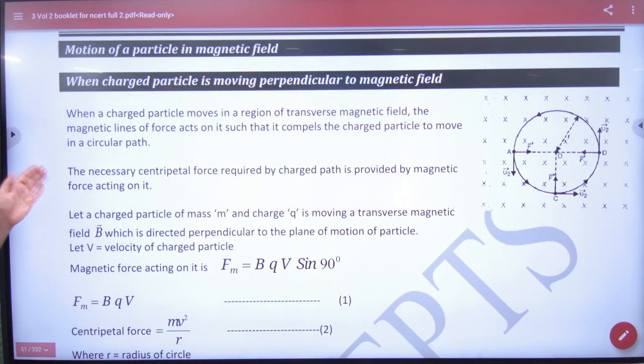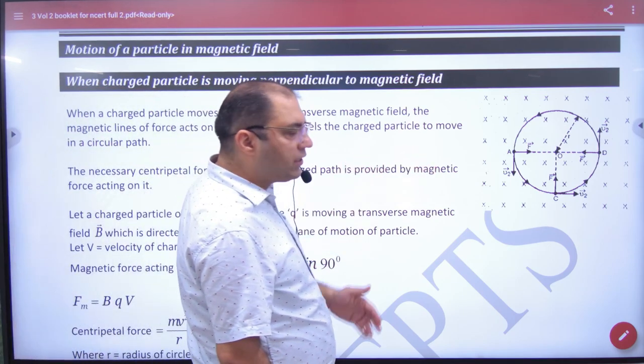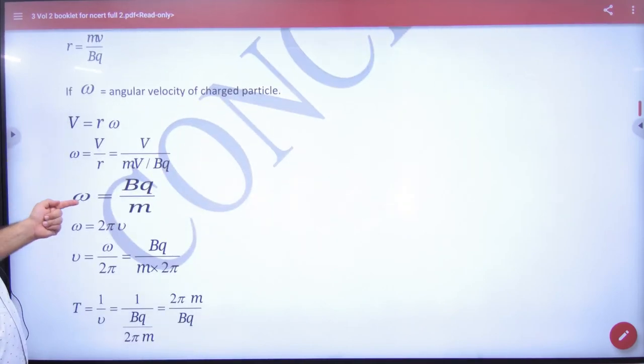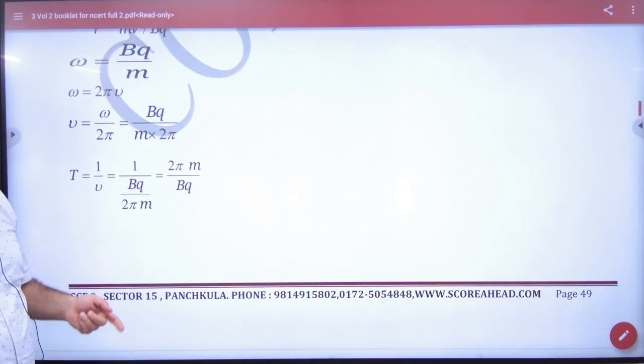Motion of a charged particle in magnetic field. Today I have done this course. If a charged particle moves in magnetic field, then it moves in a circle. We have removed radius, omega, time period, which we have already noted.